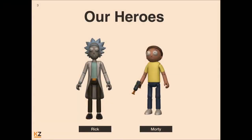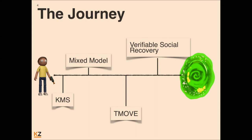I will get the help from our friends Rick and Morty to outline the talk. I would start with some background on key management systems and why they are considered hard. I will then introduce threshold signatures and see where this gets us — what we call a mixed model. And to complete the gap, I will introduce a new construction called TMOV, which stands for threshold multiple output verifiable encryption. We then instantiate it and show how it can be used to achieve verifiable social recovery that will help us complete the system as we want.